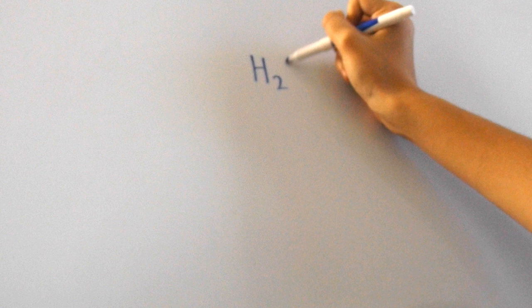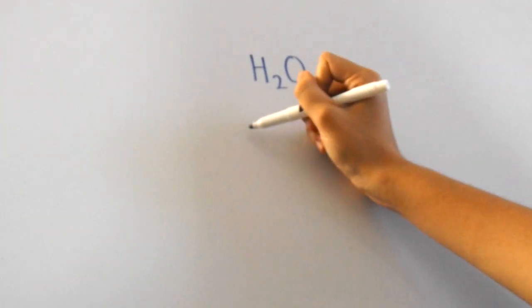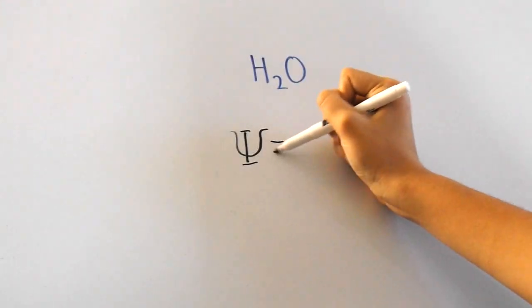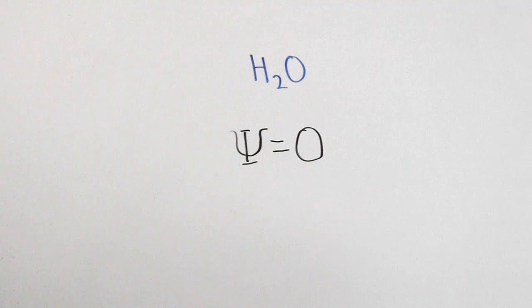So let's start off with pure water. Pure water has a water potential of zero because it doesn't have any solutes in it and we're assuming it's not being affected by pressure.